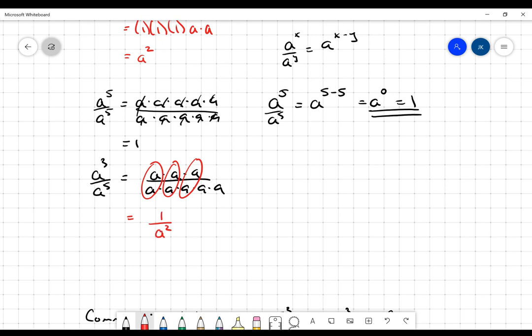I'm going to go over here and apply our rule that tells us we can subtract exponents. This becomes a to the three minus five, and I know that must be a to the negative two, because three minus five is negative two.